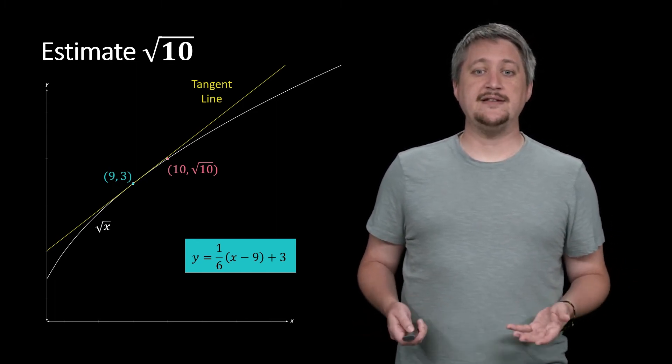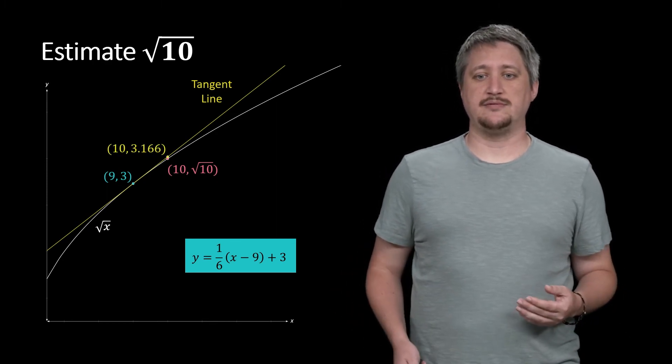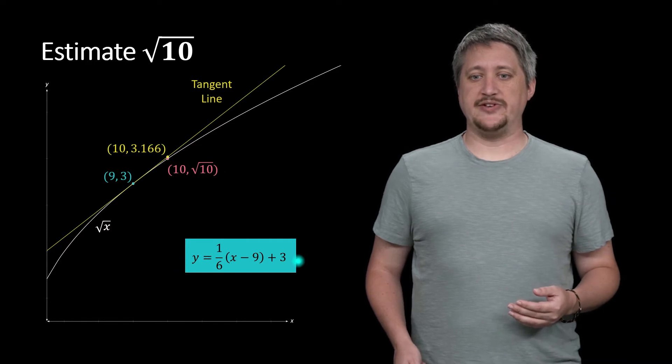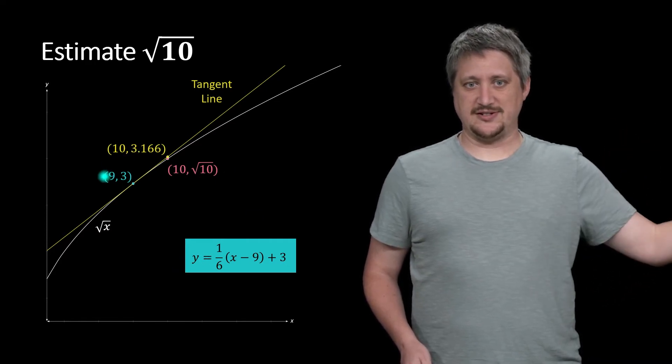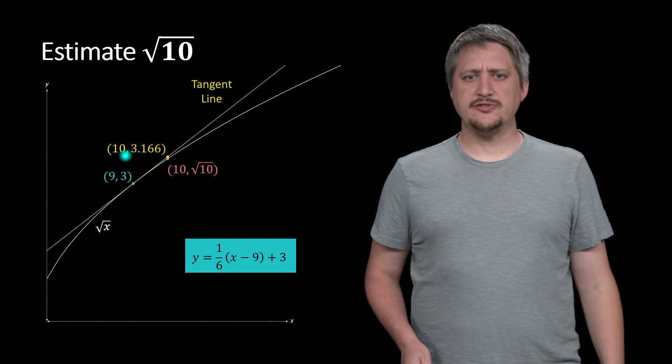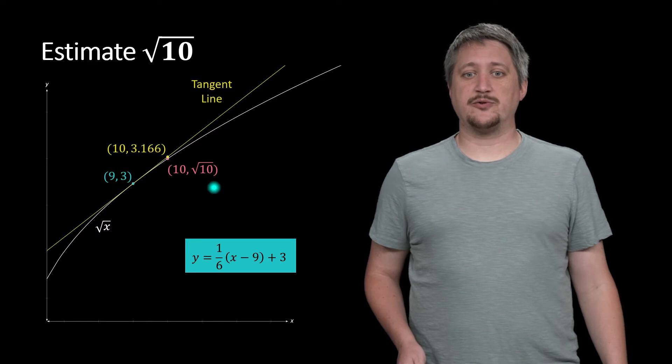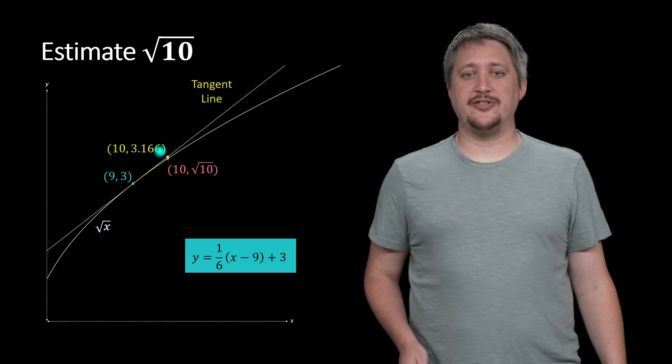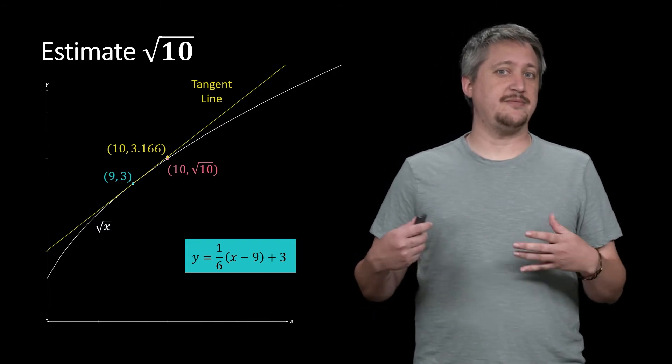But then we can plug in 10 and get an actual value. So if we plug in 10, we get 10 minus 9 is 1. So we get one-sixth plus 3 or 3.1666666, et cetera. So this would be our estimate of what square root of 10 is. Notice, again, they're not the same point. It's not the exact value. It's an estimation.